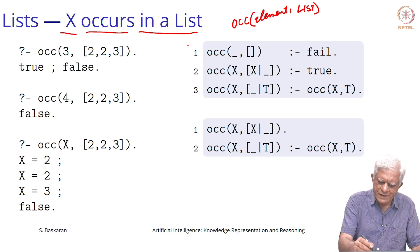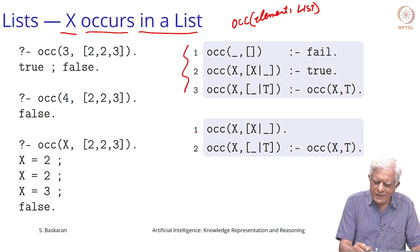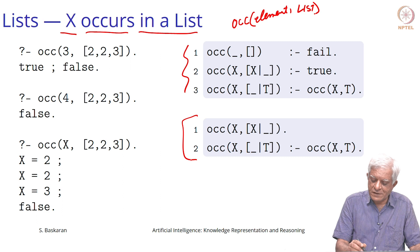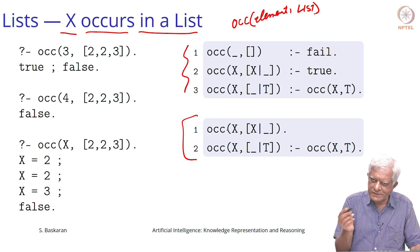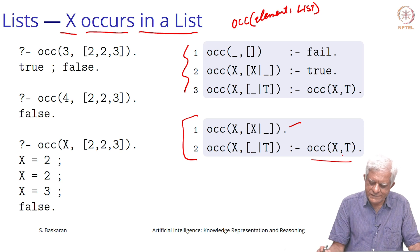We saw this program last time and the first clause is kind of redundant. We can actually work with the second program which simply says that x occurs in a list which starts with x — that is the first clause. The second clause says that x occurs in the list if it occurs in the tail of the list.